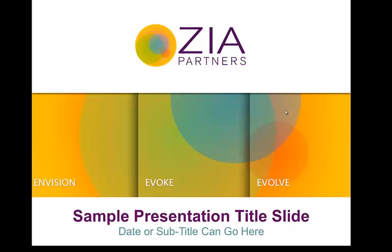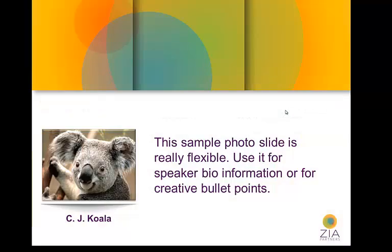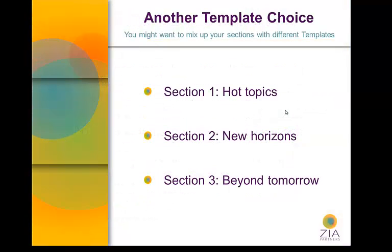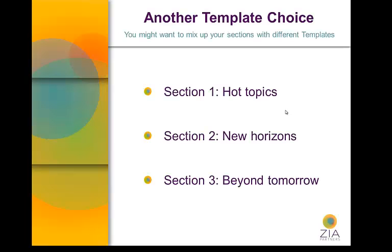Whenever you're ready to start your presentation, simply hit Enter or the arrow keys and you can walk through your presentation. It's really handy if you have something you want to emphasize and you want to move off your presentation for a moment and simply talk to the audience — just hit the B key for black or the W key for white, then proceed ahead with your presentation using Enter or arrow.